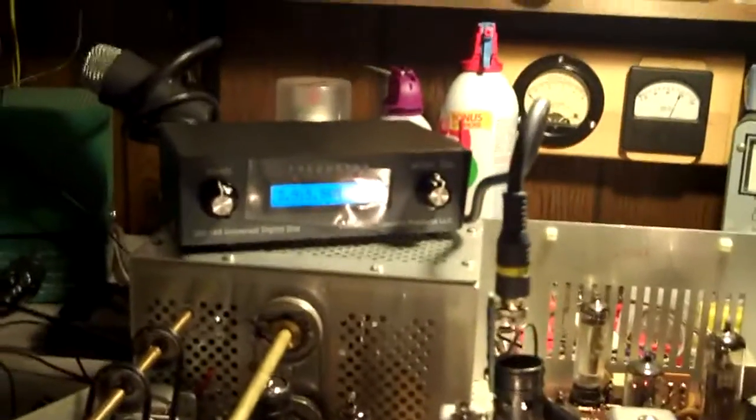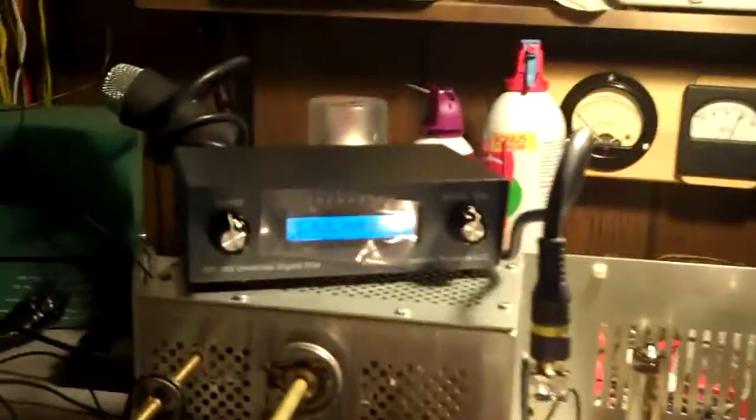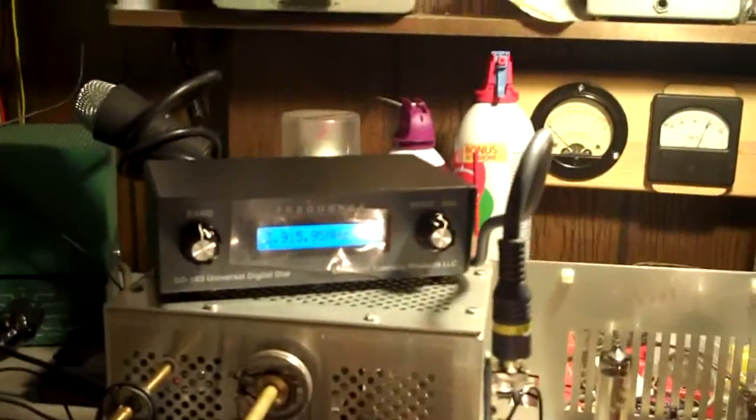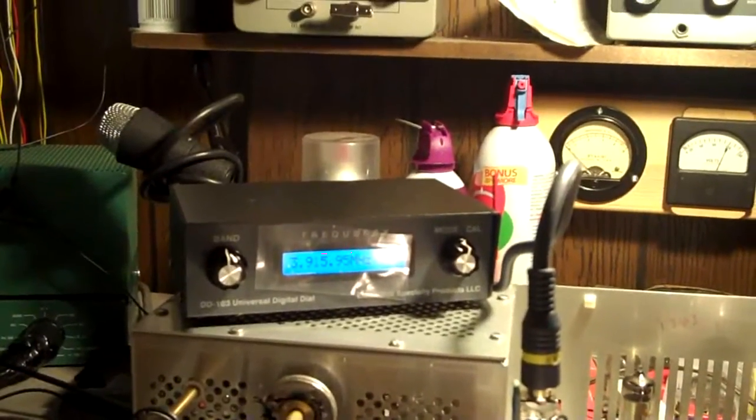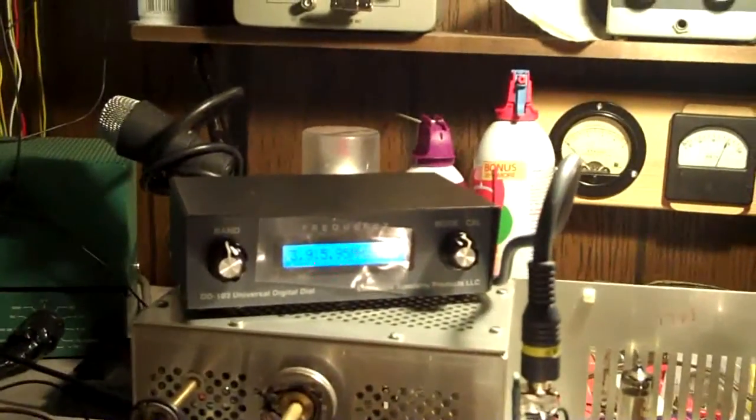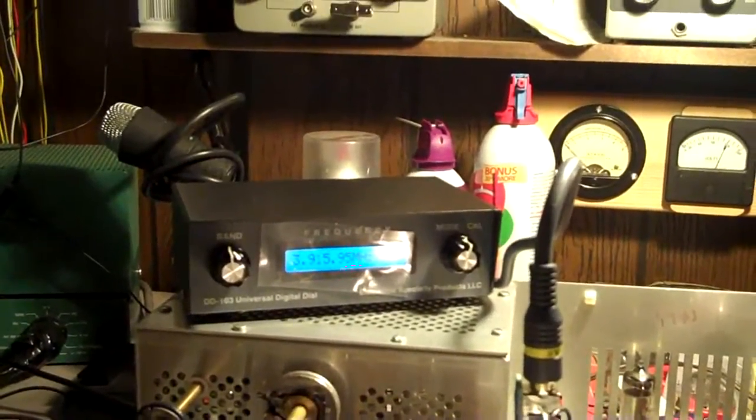A while back, I told you if I didn't get my dial squared away, there would be a plan B. Well, now you know what plan B was. Getting one of these. But my son bought it for me for Christmas. It kept me from having to pay for it. $125. I think he paid for it on eBay.